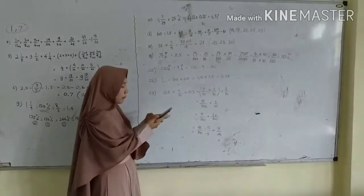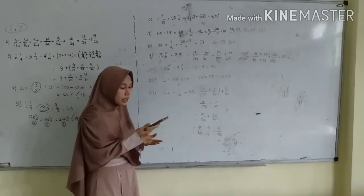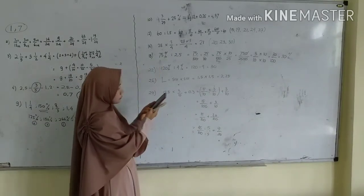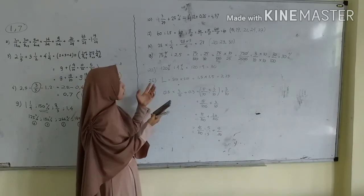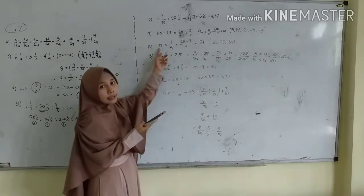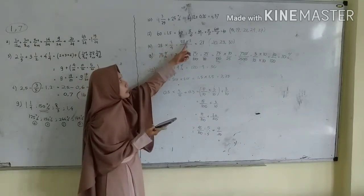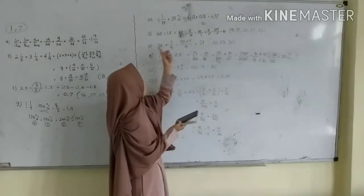Lanjutkan nomor 14. Nomor 14 itu soal cerita juga. Jika berat satu buah roti adalah 3/4 kilogram, berat 28 buah roti adalah? Berarti tinggal mengalikan saja, 28 kali 3 dibagi 4, biasanya 21. Nomor 14 ini caranya sama dengan nomor 20, 23, dan 30.